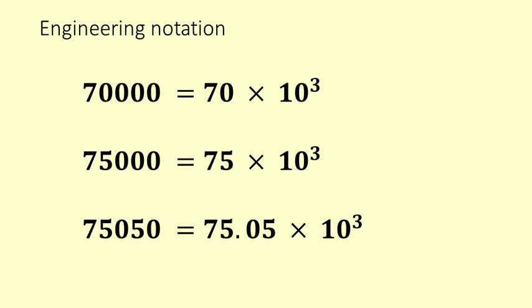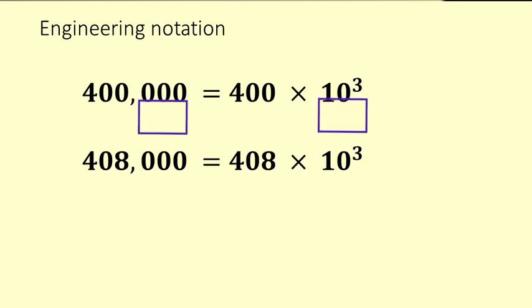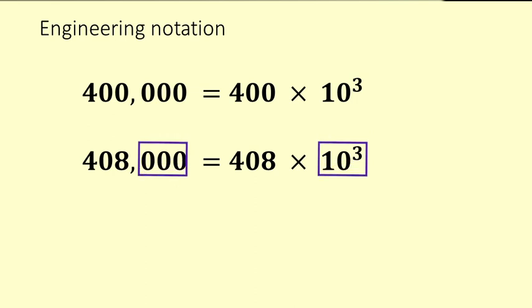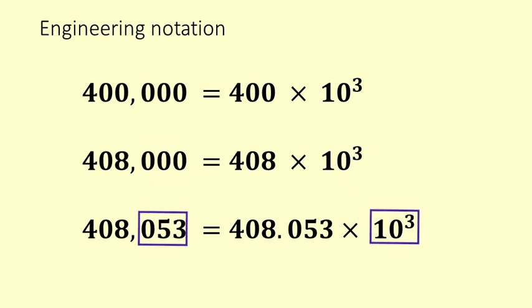What about 400,000? Well that is 400 times 1,000, or 400 times 10 to the 3. 408,000 is 408 times 10 to the 3. And 408,053 is 408.053 times 10 to the 3. Notice these have all been 10 to the 3 — we started with a single digit times 10 to the 3 and got up to 408 times 10 to the 3.